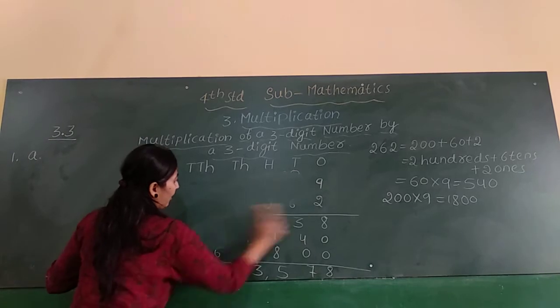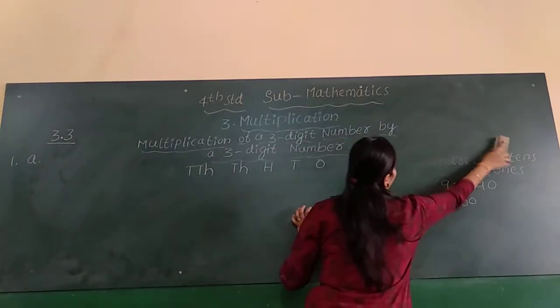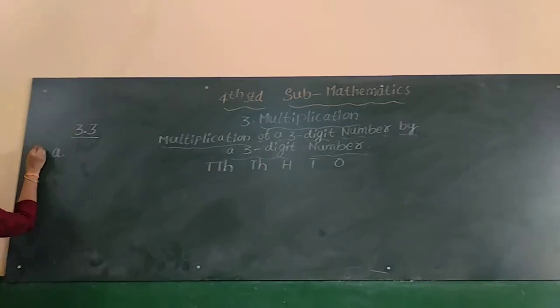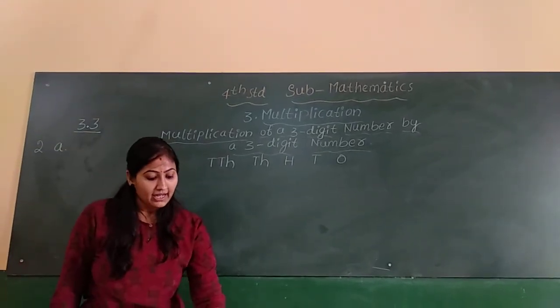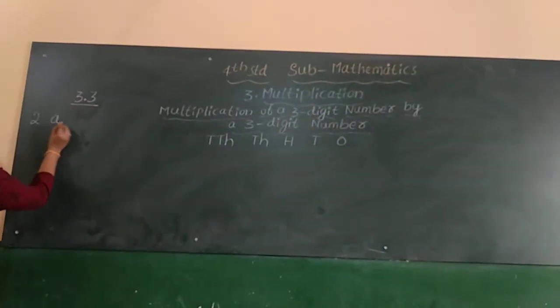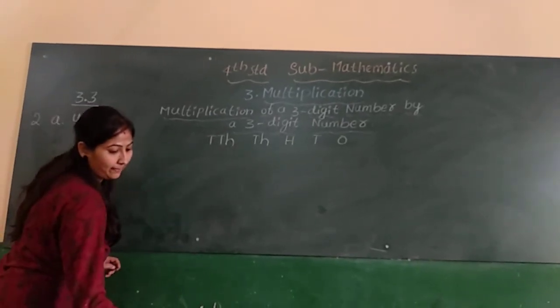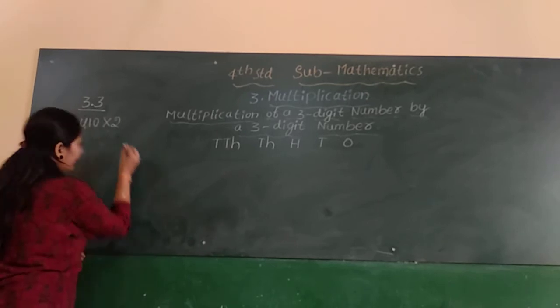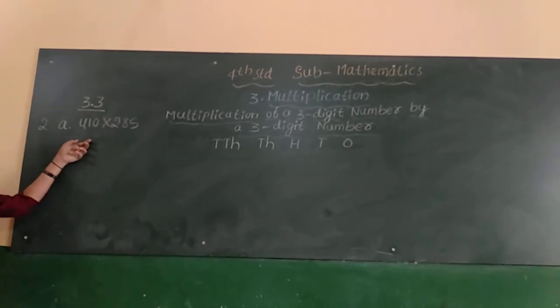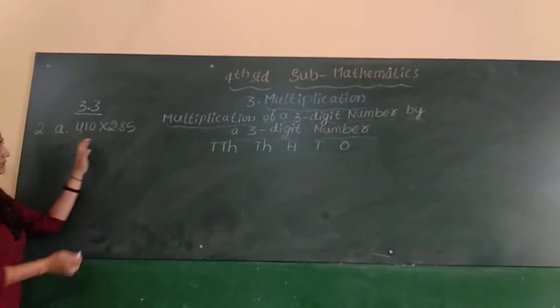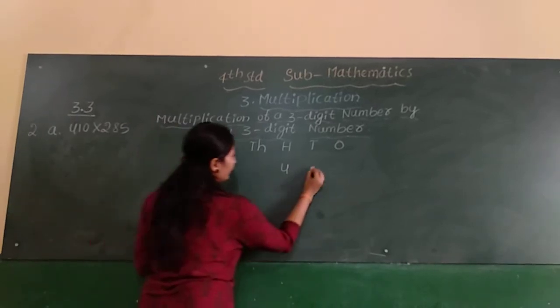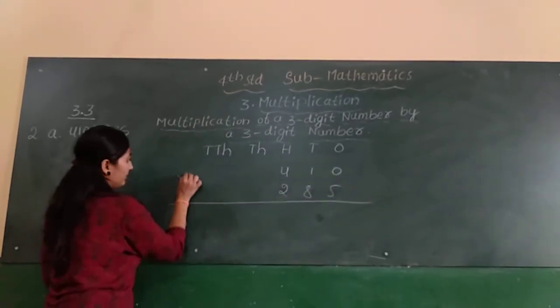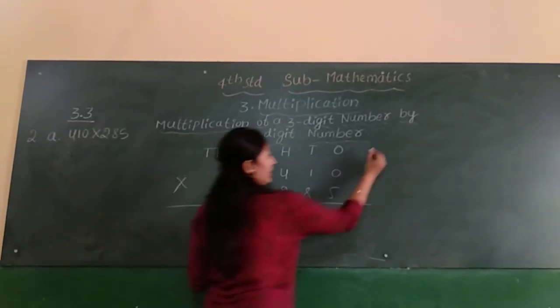Next we will see one more problem. Exercise 3.3, second problem: arrange in columns and multiply. They have given 410 into 285. We can arrange according to place value column-wise.